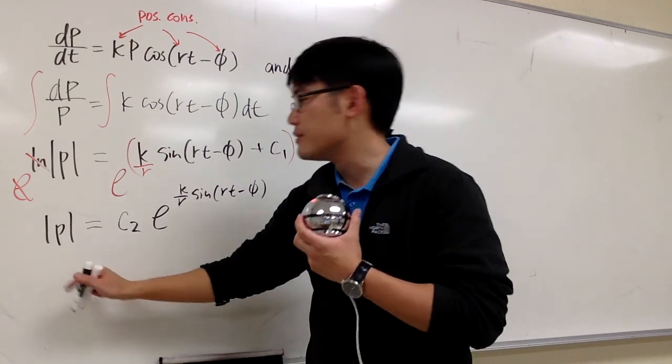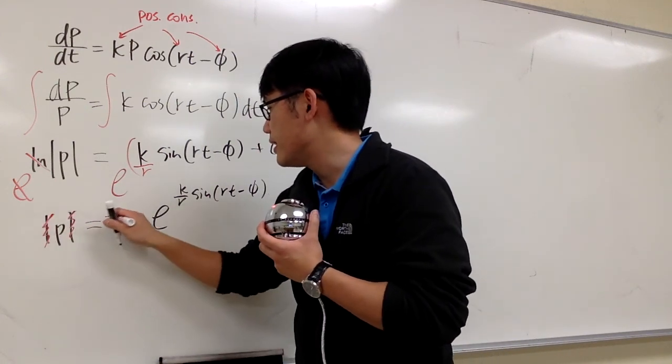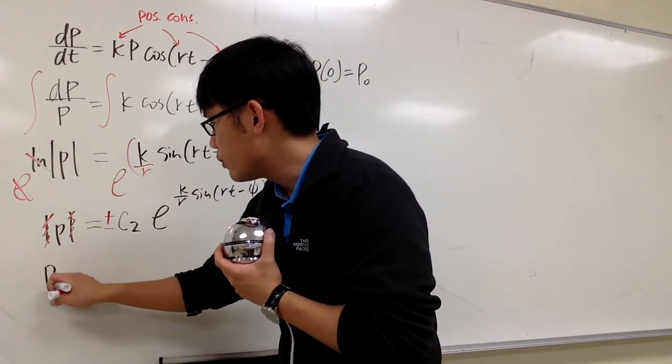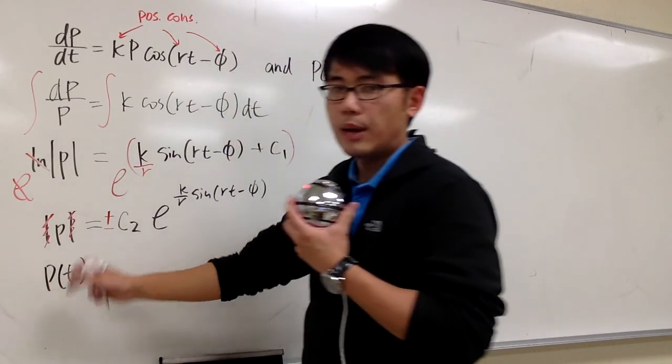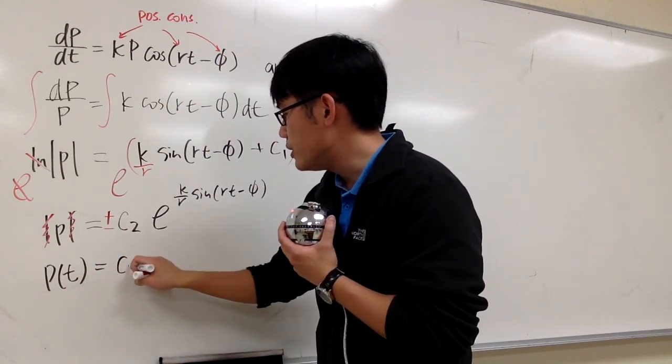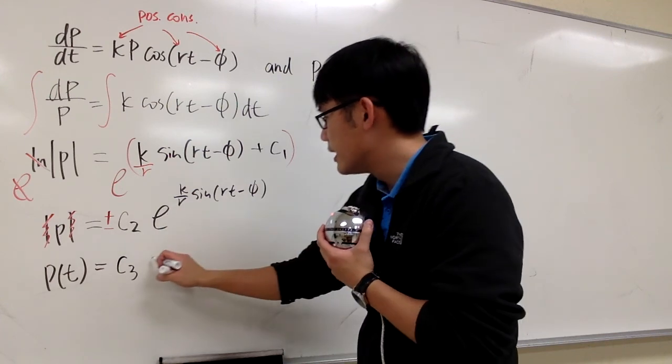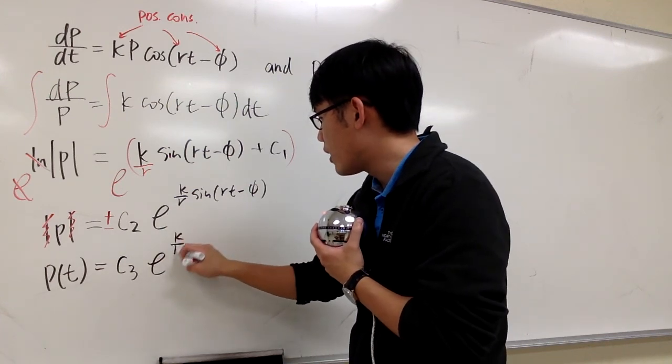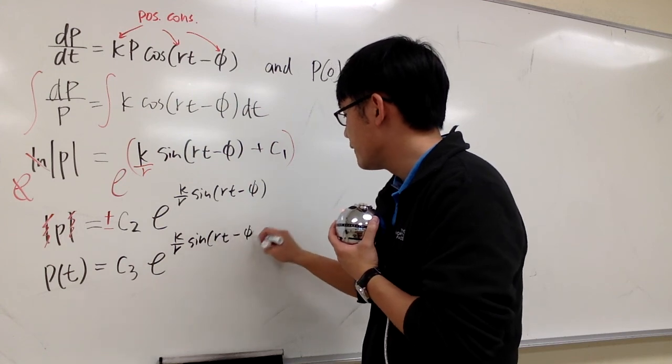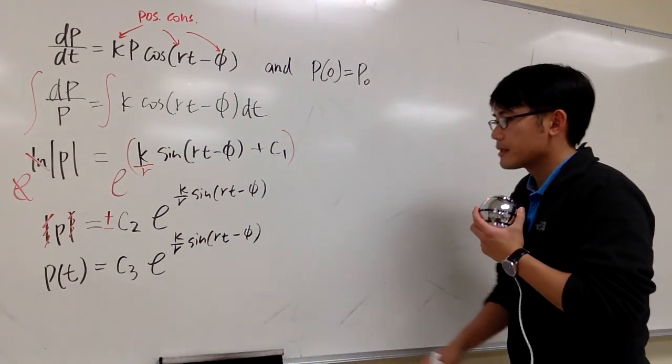And I have to get rid of the absolute value. So just get rid of this. And technically, I put a plus minus on the right-hand side. And then technically, I'm done with finding the general solution. I will call that p(t). This is plus minus c2. I will call that c3. And the rest, e to the k over r, sine of rt minus v. That's the general solution.